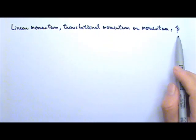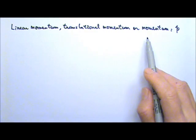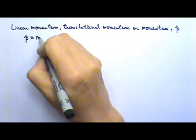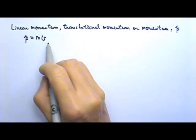We use lowercase p for momentum. I don't know why we use p, but it certainly is not a good idea to use m because we're already using m for mass. In any case, the definition for momentum is m times v, mass times velocity.